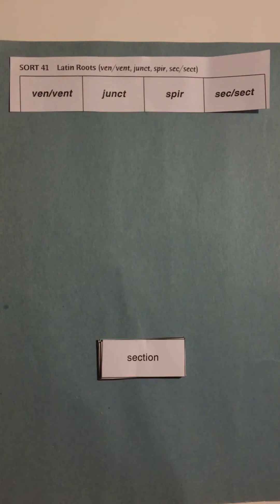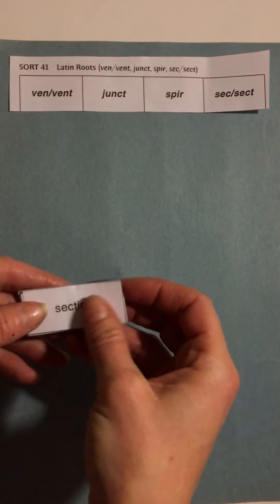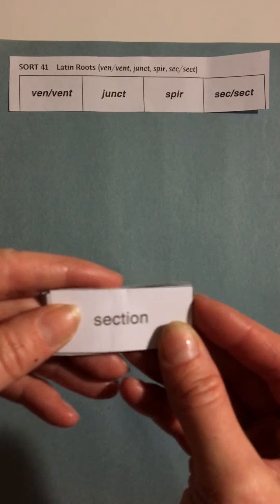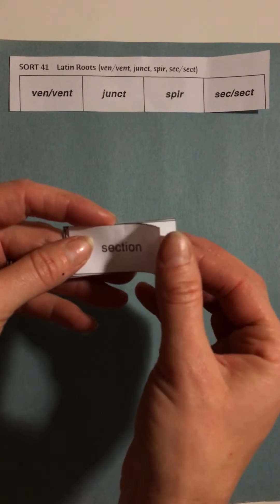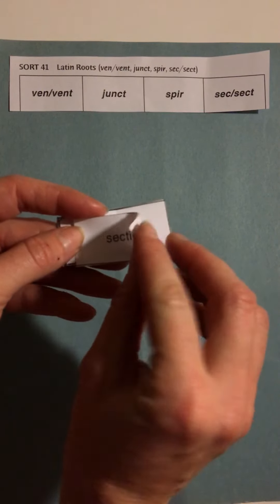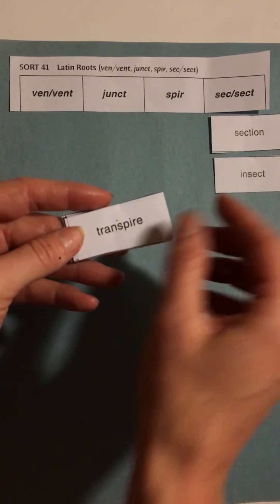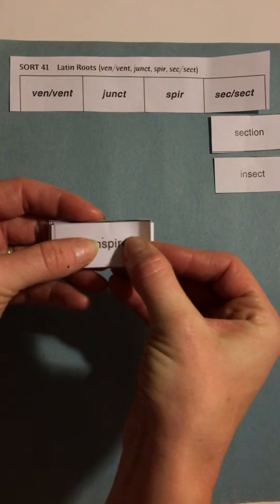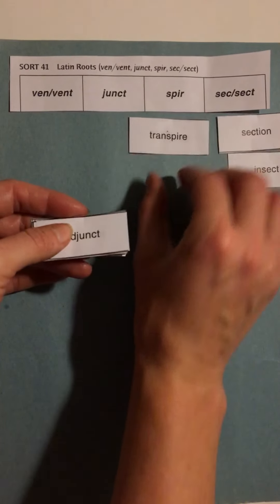DR Sort 41 Latin roots. Let's go ahead and sort these words by their pattern and then talk about their meaning. Simply, we look and see which root each word has. So it's the 'sec' one — put it here. Insect. Transpire. Let me spread these out a little more so you have some space.